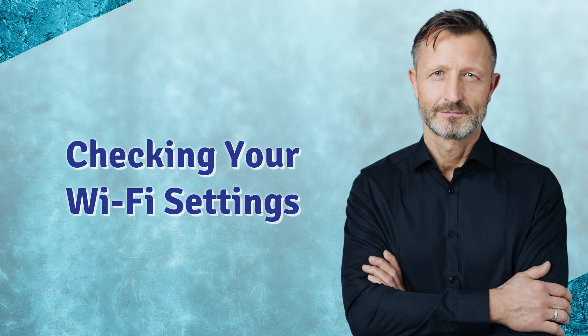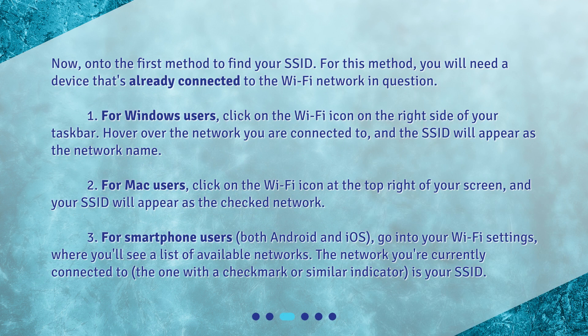Checking Your Wi-Fi Settings. Now, on to the first method to find your SSID. For this method, you will need a device that's already connected to the Wi-Fi network in question. For Windows users, click on the Wi-Fi icon on the right side of your taskbar. Hover over the network you are connected to, and the SSID will appear as the network name. For Mac users, click on the Wi-Fi icon at the top right of your screen, and your SSID will appear as the checked network.